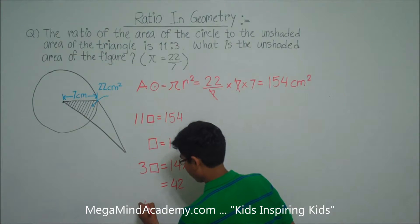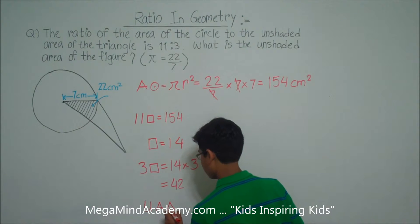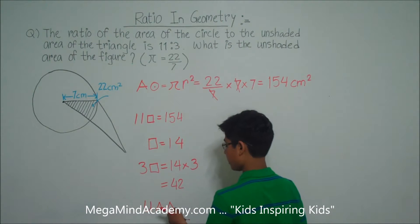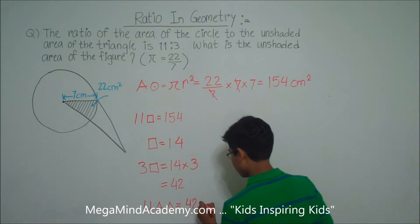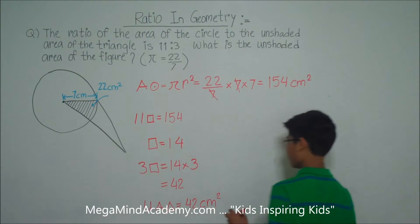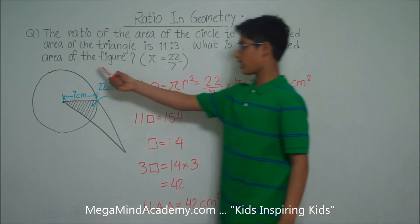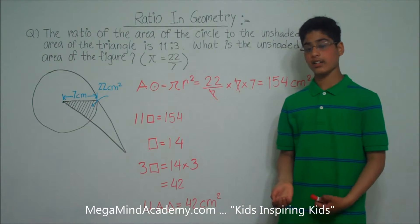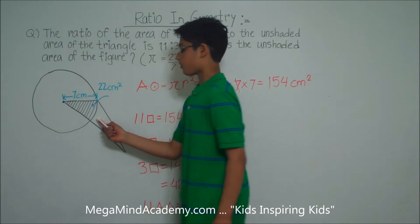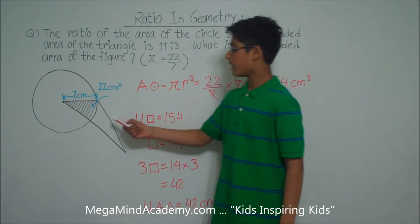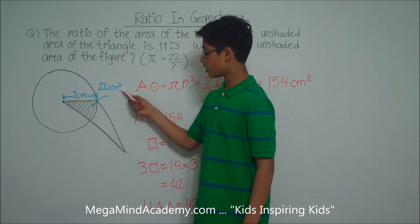So the unshaded area of the triangle — U for unshaded, A for area — is equal to 42 centimeters squared. Now we need to find the unshaded area of the figure. To do that, we add the area of the whole circle with the unshaded area of the triangle, and then subtract the area of the shaded portion, which is 22 centimeters squared.